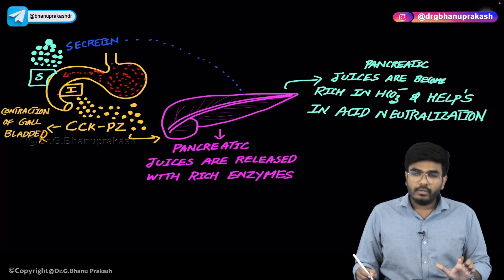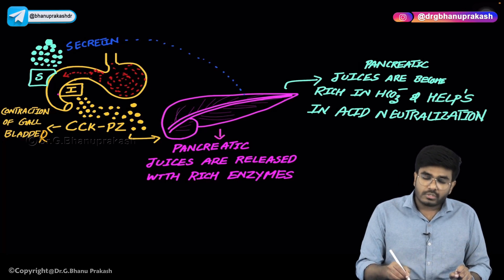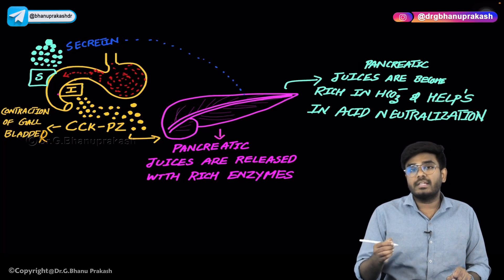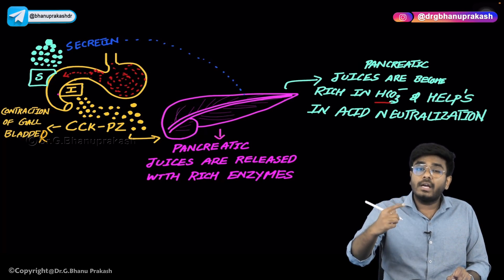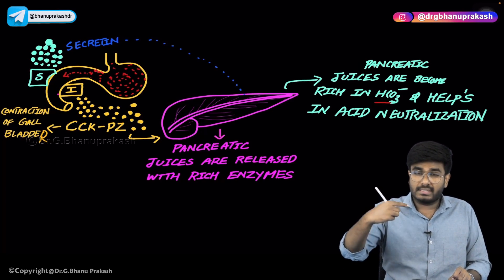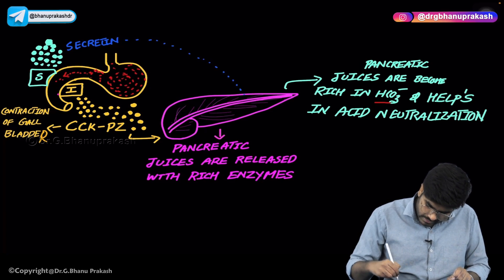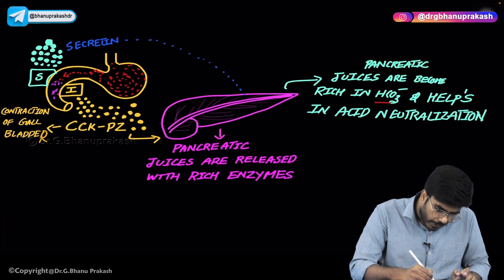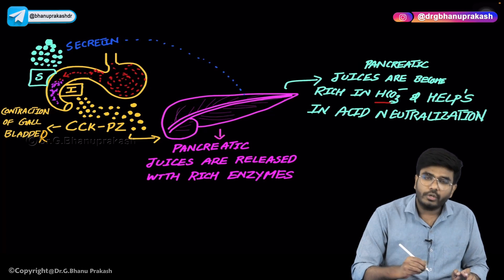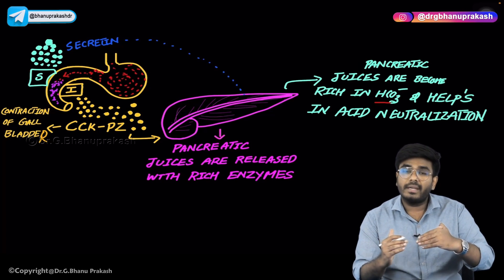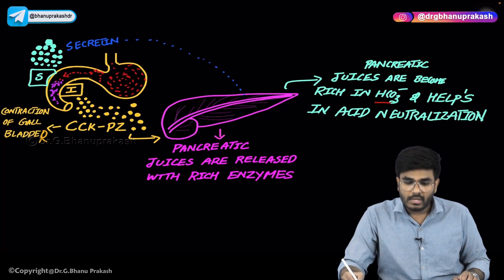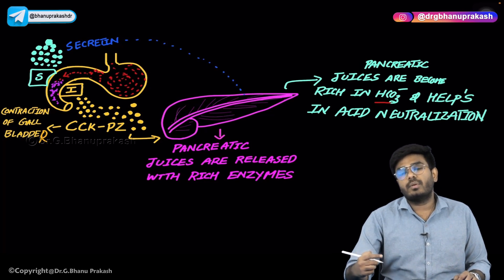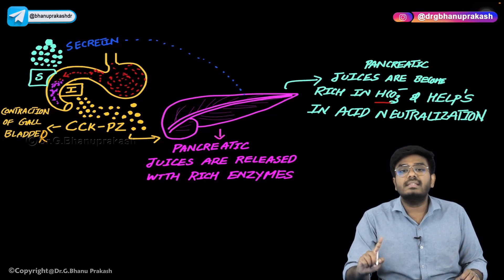When acidic chyme reaches the duodenum, the duodenum senses the acid. The S cells in the duodenum signal the pancreas, and the pancreas produces bicarbonate-rich pancreatic juices. These bicarbonate-rich juices are released into the duodenum — because the pancreas opens into the duodenum. The acid and the bicarbonate-rich juice mix, resulting in neutralization of the acid. So acidic chyme coming from the stomach is the stimulus for S cells to release secretin.